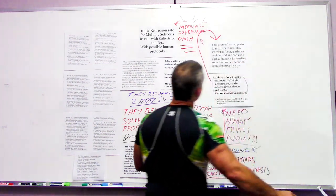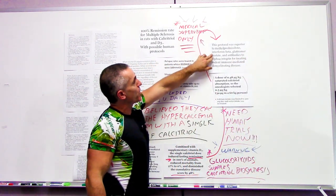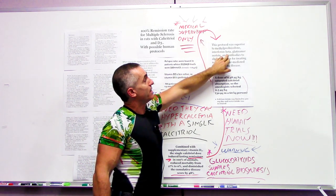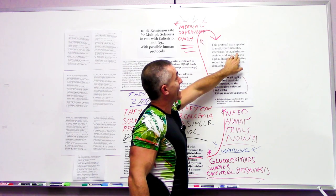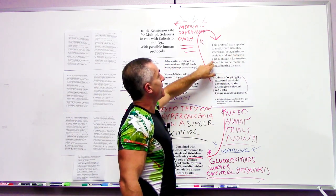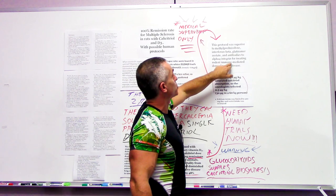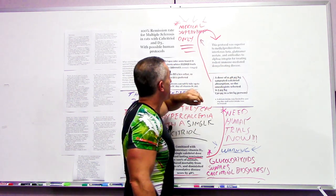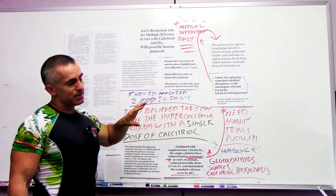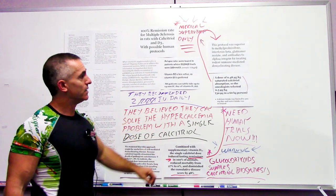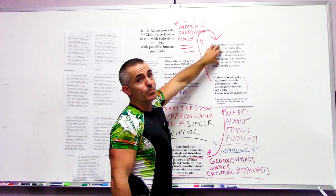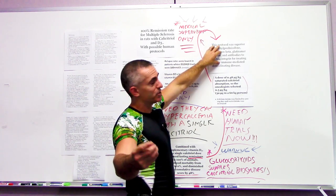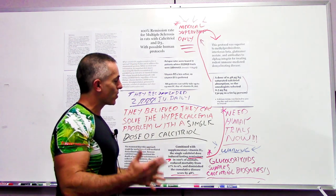The protocol was superior to methylprednisolone, interferon beta, and glatiramer acetate, and antibodies to alpha-4-integrin for treating rodent immune-mediated demyelinating disease. So basically, the single dose of calcitriol beat all the primary drugs that are being used for MS, at least in animal studies.